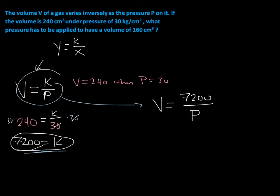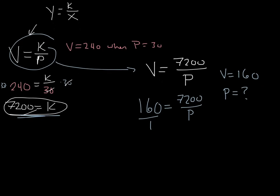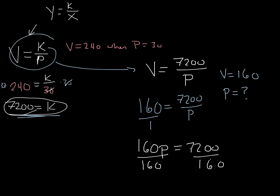Now that we have the constant of variation, we can find the pressure. The question asks what pressure has to be applied to have a volume of 160. So we want to know when V is 160, what is P? We plug V in: 160 equals 7,200 over P. Cross multiplying gives us 160P equals 7,200. Dividing both sides by 160, we get P equals 45.